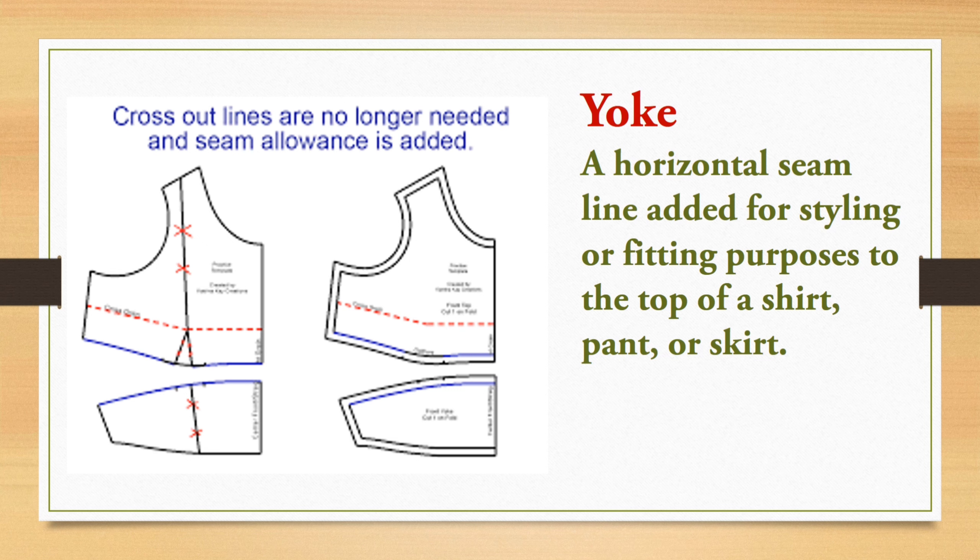Next is yoke. Yoke is an extra piece that covers from the shoulder to the chest area. We have discussed different kinds of yokes in the basic design techniques videos on this channel.